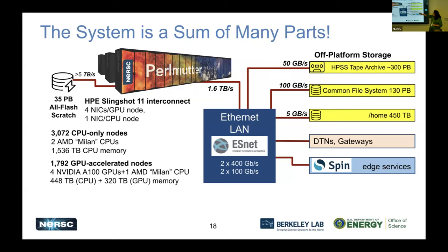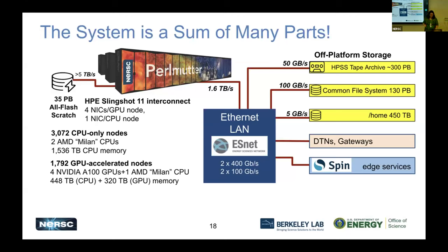We also have DTNs — data transfer nodes — used to transfer data to and from NERSC. We have gateways, and SPIN which provides edge services — it can act as an interface from the public web to data stored in our file systems.